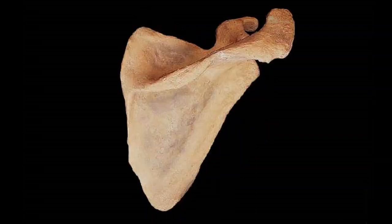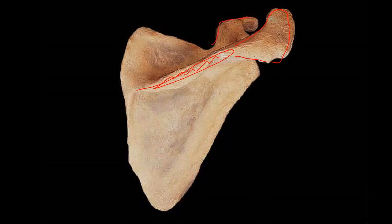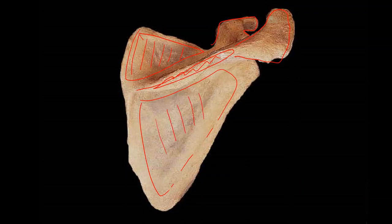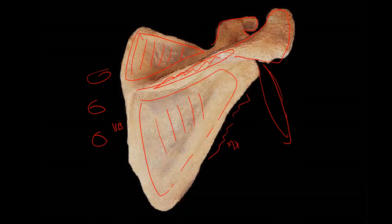Here's the scapula from the back. We see the long spine of the scapula, which leads to the expanded acromion or acromial process. In front, snaking around, is the coracoid process. Above the spine is the supraspinous fossa, and below the spine is the infraspinous fossa. This side is where the vertebrae would be — the vertebral or medial border; this is the axillary or lateral border. We can see the inferior border at the bottom and the suprascapular notch up there by the superior border.